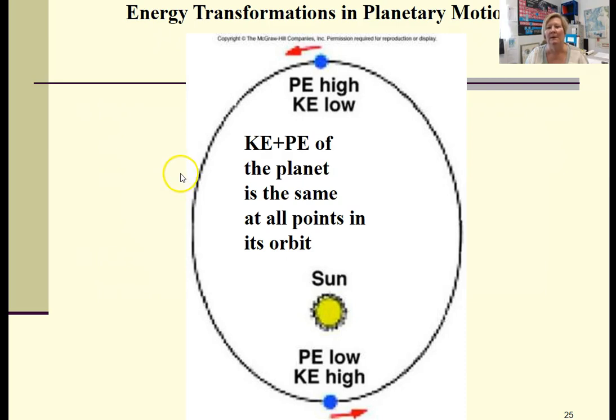A planet in orbit around the Sun would have kinetic energy highest when it's near the Sun, potential the lowest. Furthest away from the Sun, the potential would be high, kinetic would be lower.